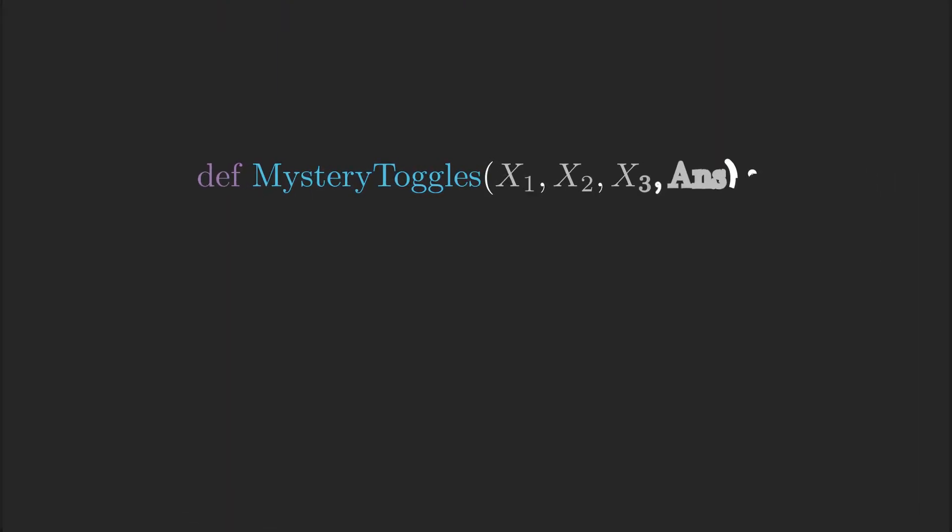The problem in question is about a function called mystery toggles, which operates on four bits: boolean values called x1, x2, x3, and answer.